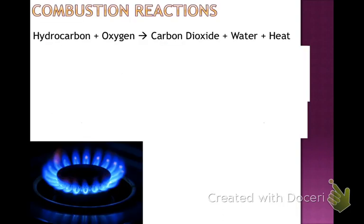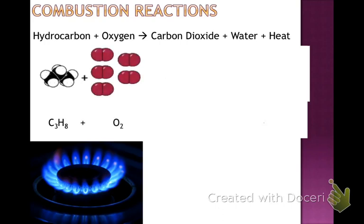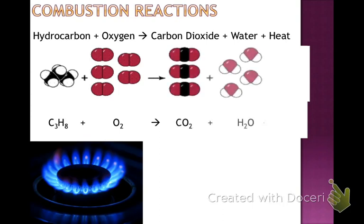So the first one is combustion reactions. Here I have a picture of a gas stove. It can be using natural gas or propane. Pretty much we start out with a hydrocarbon, which is just a member of carbon and hydrogen chain. In this case it ends up being propane, which is C3H8. When we add oxygen to it, the propane and the oxygen molecules will break up and form carbon dioxide, water, and then heat will also be released. So this is called an exothermic reaction.